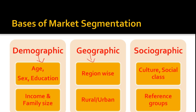The bases of market segmentation include: first, demographic — age, sex, education, income, and family size. We divide as per age, male and female, education levels such as professionals, graduates, undergraduates, and income or family size. Second is geographic — dividing on the basis of region, locality, or rural versus urban. Third is sociographic — dividing by culture, social class, and reference groups.